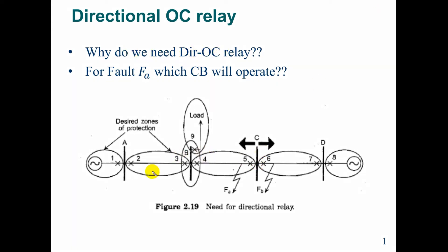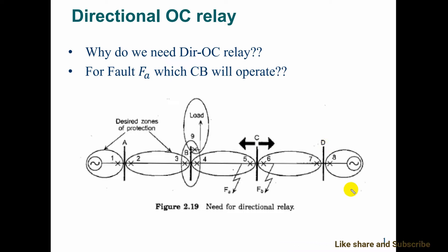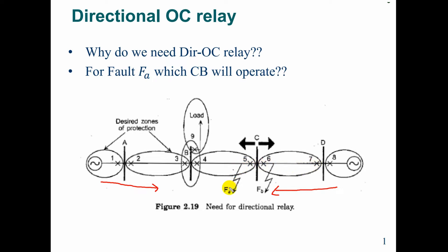For example, we have this four bus system — bus A, bus B, bus C, and bus D — and it is powered from both sides. Bus D ke saath ek generator lagaye, bus A ke saath ek generator lagaye. So current is going in this direction and also in the other direction. So if for example a fault occurs at this location, after circuit breaker 5 or between 4 and 5, which circuit breaker needs to operate depending on which side the power is coming from?